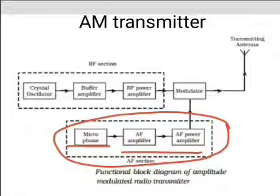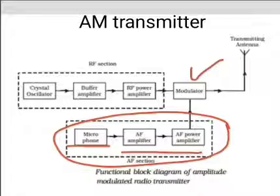The output from the AF amplifier is fed to the AF power amplifier block. This block provides the required audio frequency power. This output is given to the modulator. The modulator is an electronic circuit with transistor and passive components which performs the process of modulation.